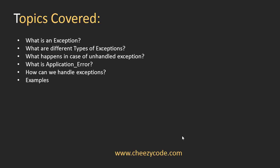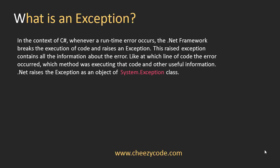Let's first discuss what an exception is. In the context of C#, if an application is running and an error occurs, the .NET framework raises an exception and breaks the execution of the code. This raised exception contains all the information about the error: at which line of code the error occurred, which method was executing that line, and what parameters were being passed to the method. We get an object of the exception, and that object is of the System.Exception class.